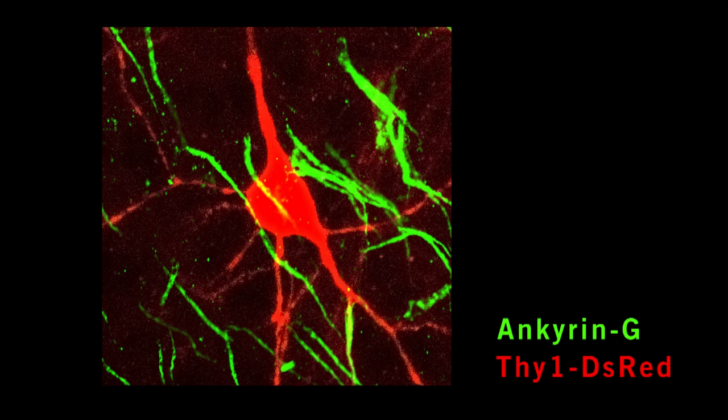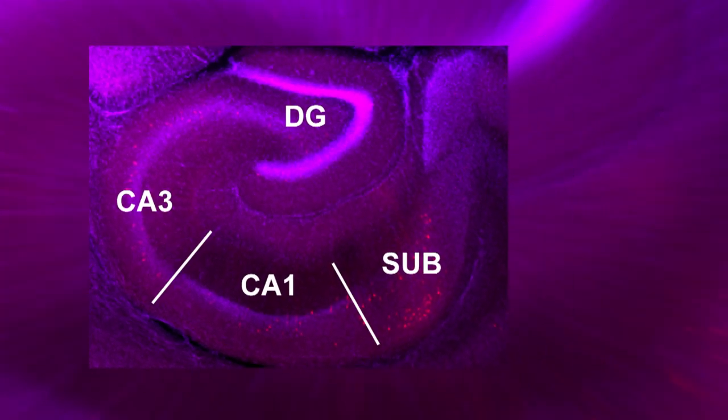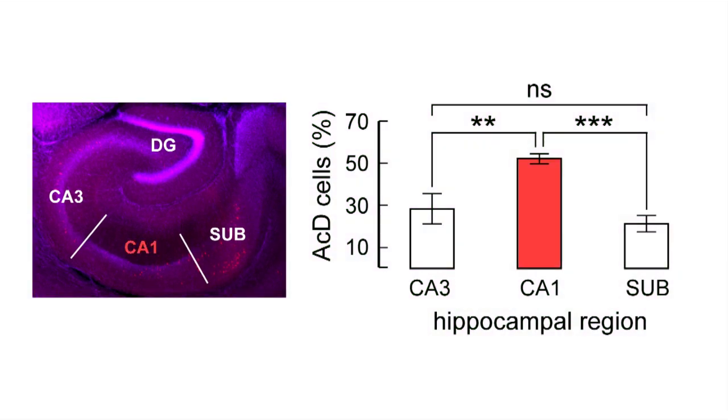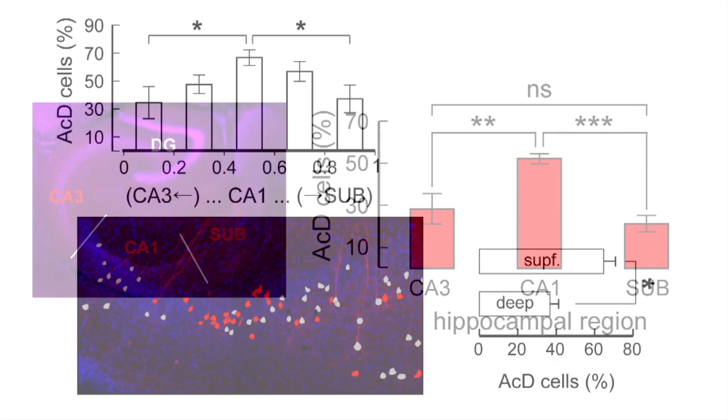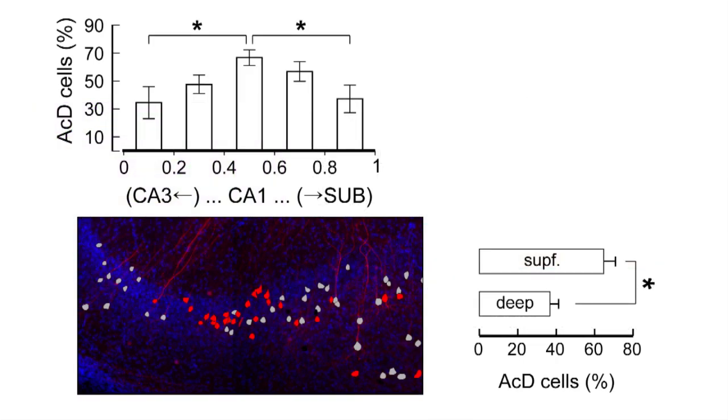To our surprise, we found many cells which showed a dendritic origin of the axons throughout the hippocampus. Half of all cells in the CA1 area showed this morphology, but also many cells in CA3 and the subiculum. The highest density of these cells was found in the central portion of CA1, but there was also a preference towards the more superficial layer of this region.